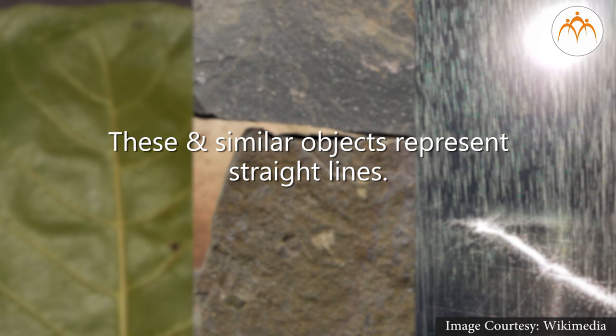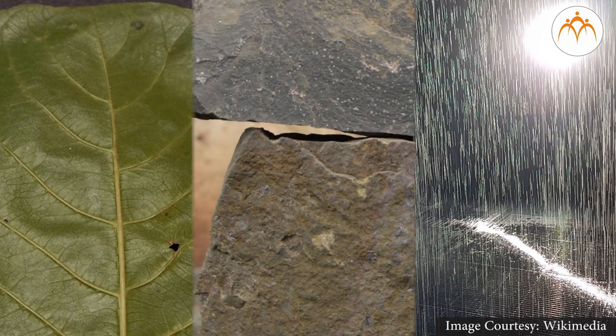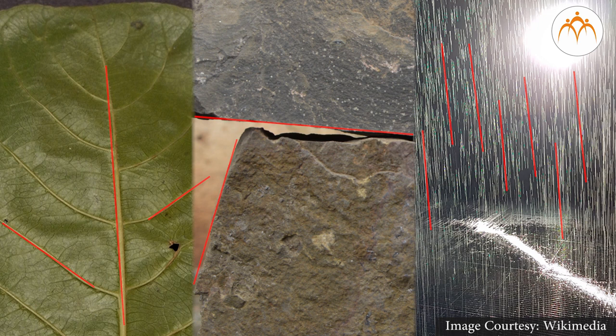These may not be as straight as defined in the basic geometrical concept of a straight line. However, the essential property of being a straight edge is present in all these. As such, the definition of a geometric straight line might have been derived from such similar examples of approximately straight lines that appear in the nature around us.